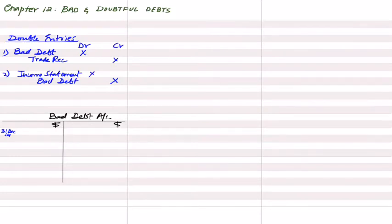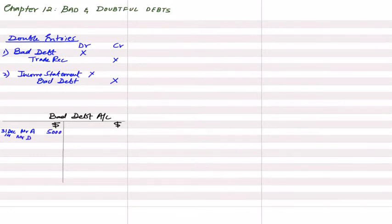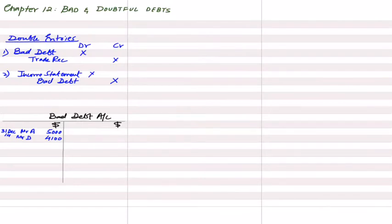You may print out the question or keep it on a separate device. The link is available in the video description. In the first year, 2014, there are two bad debts: Mr. A for 5,000 and Mr. D for 4,100. The entries are: bad debt debit and Mr. A account credit, then bad debt debit and Mr. D account credit. Whether bad debt was written off during the year or needs to be written off makes no difference — both come in the bad debt account.